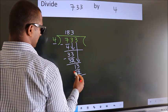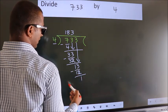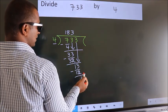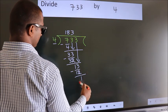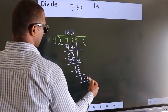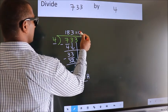Now we subtract. We get 1. No more numbers to bring down. So we stop here. This is our remainder. This is our quotient.